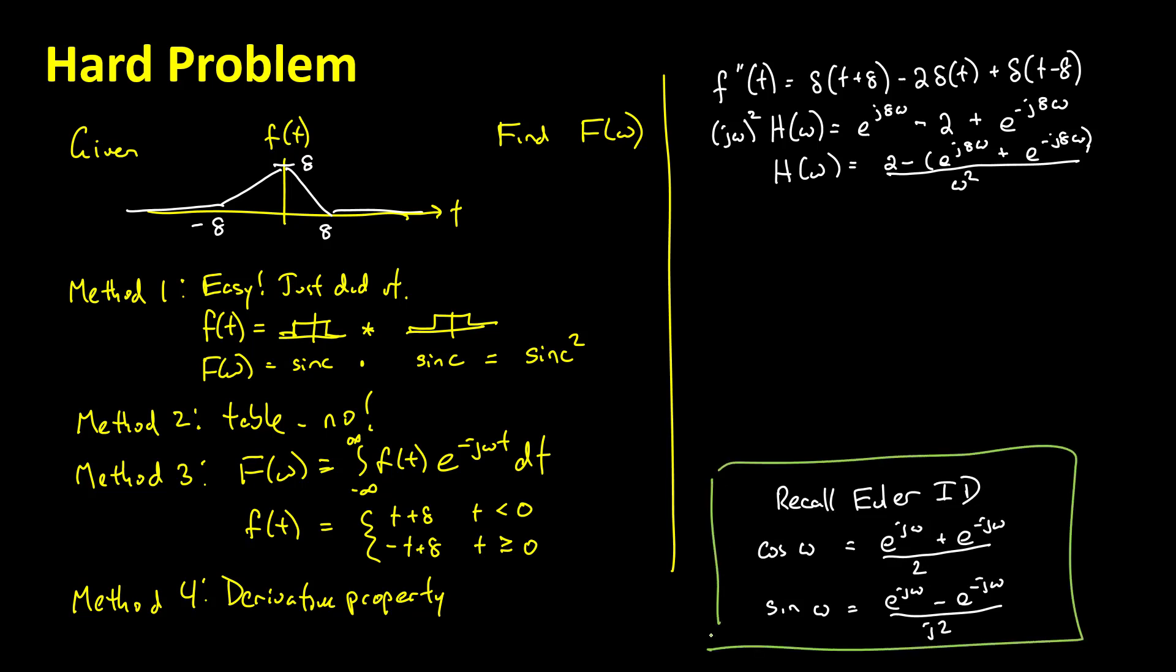And a sine of omega equals e to the j omega minus e to the minus j omega all over j2. So which of these two versions does this look the most like? Well, this has a plus, this has a minus, so it looks like cosine. Now we just have to get it into this form. So let's do my favorite trick of writing not what we have, what we wish we had. And we wish we had e to the j 8 omega plus e to the minus j 8 omega all over 2.